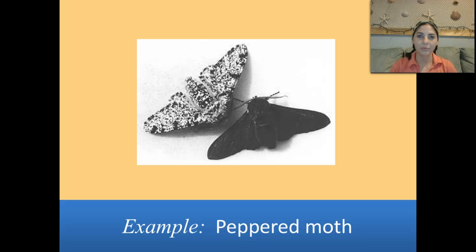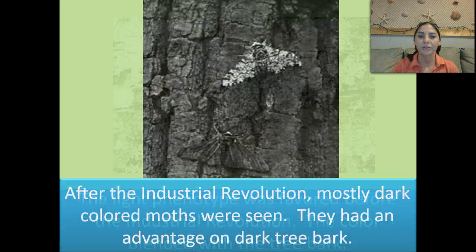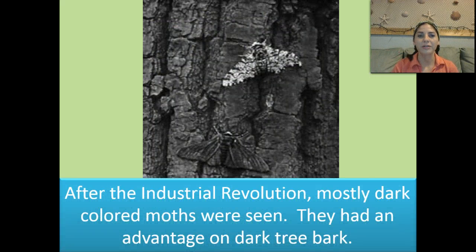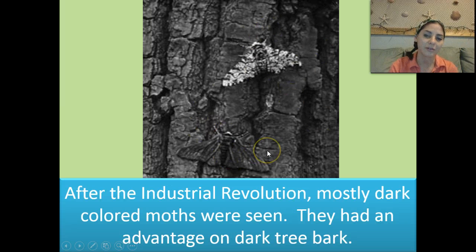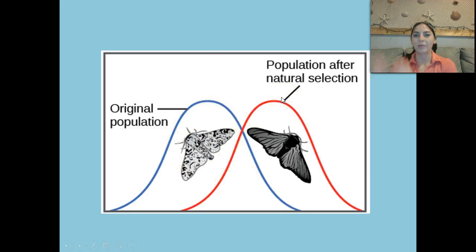Another example is the peppered moth, which we've already spoken about. The light phenotype was favored before the Industrial Revolution because it blended into the tree bark. After the Industrial Revolution, the black moths were favored because they blended into the darkened tree bark, while the white moths were not so lucky. We have our original population, and then — bam — the population after natural selection has occurred with the Industrial Revolution.